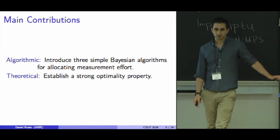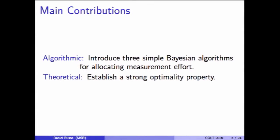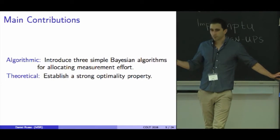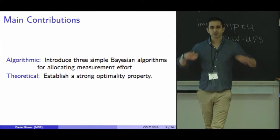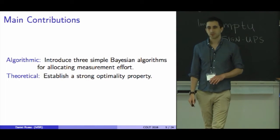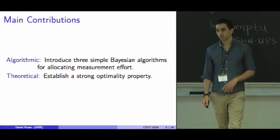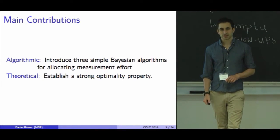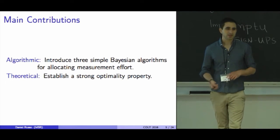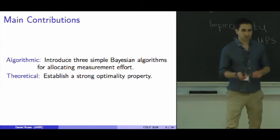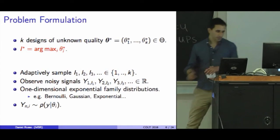The main contributions of this work are in two areas. One is algorithmic: I'm going to propose these three really simple Bayesian rules for allocating our measurement effort. And on the theoretical end, I'm going to try to establish a sense in which these very simple rules are the best thing we could do. One thing I'm going to try to do in the paper and in this talk is keep these contributions as separate as possible, so that a practitioner could come in and understand these rules, adapt them to different settings, and they don't ever need to think about limits or KL divergences to make those changes.